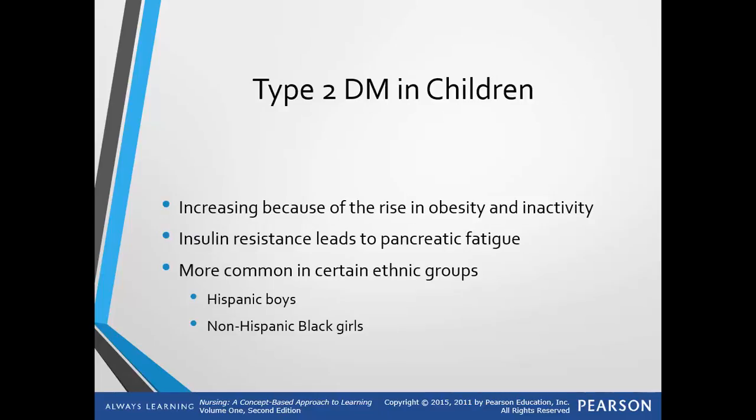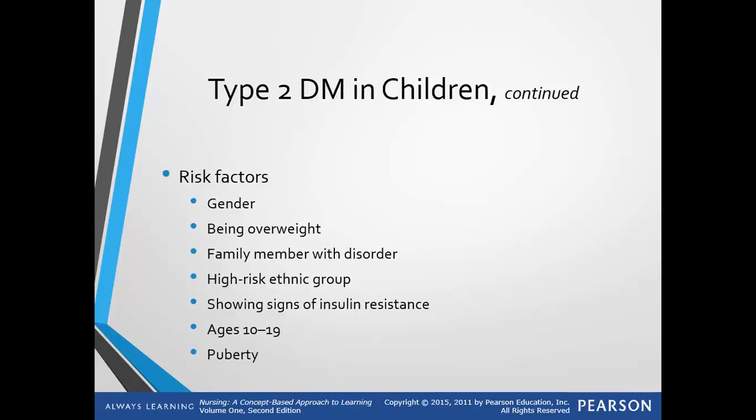Type 2 diabetes in children is increasing because of the rise in obesity and inactivity in today's youth. As with adults, there is an insulin resistance that leads to pancreatic fatigue as the organ tries to keep up with insulin production, resulting in hyperglycemia. It is most common in certain ethnic groups — Hispanic boys and non-Hispanic Black girls are both affected by obesity. Risk factors for type 2 diabetes in kids are similar to adults.